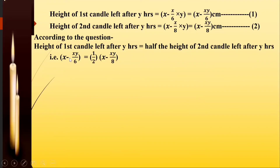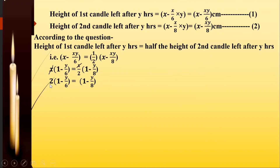Taking x common from both sides: x into (1 minus y upon 6) equals x upon 2 into (1 minus y upon 8). We can cancel out x from both sides since the candle heights are not zero. Bringing the 2 to the left side gives us 2 times (1 minus y upon 6) equals 1 minus y upon 8. Expanding: 2 minus y by 3 equals 1 minus y by 8.